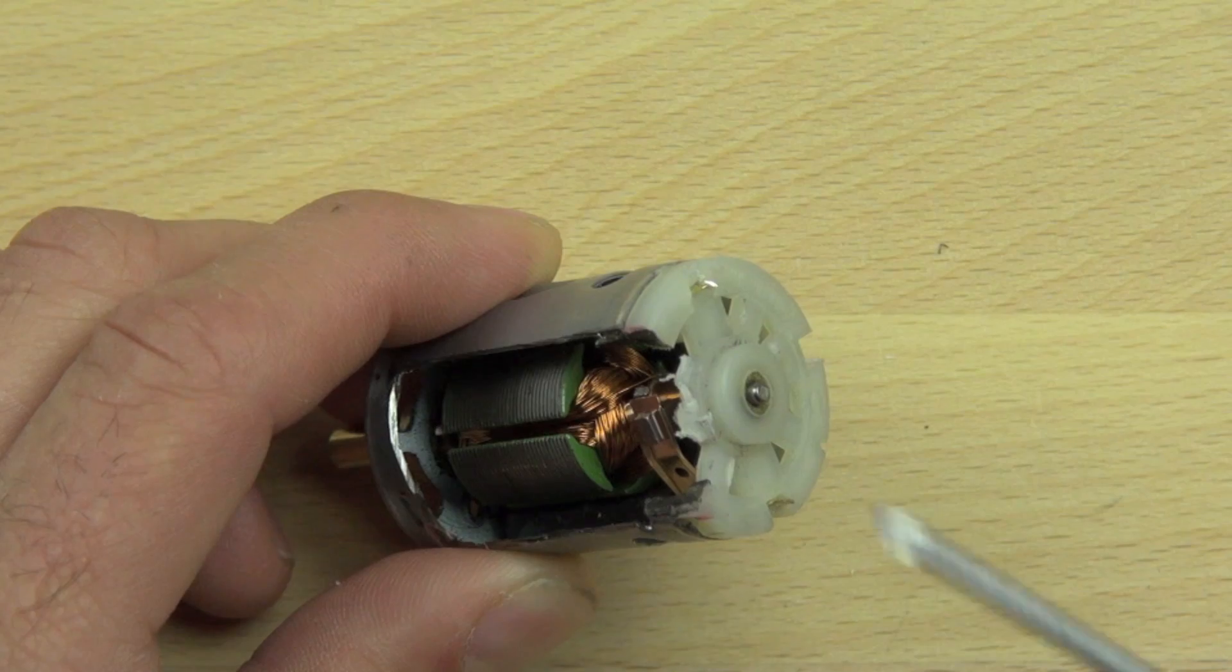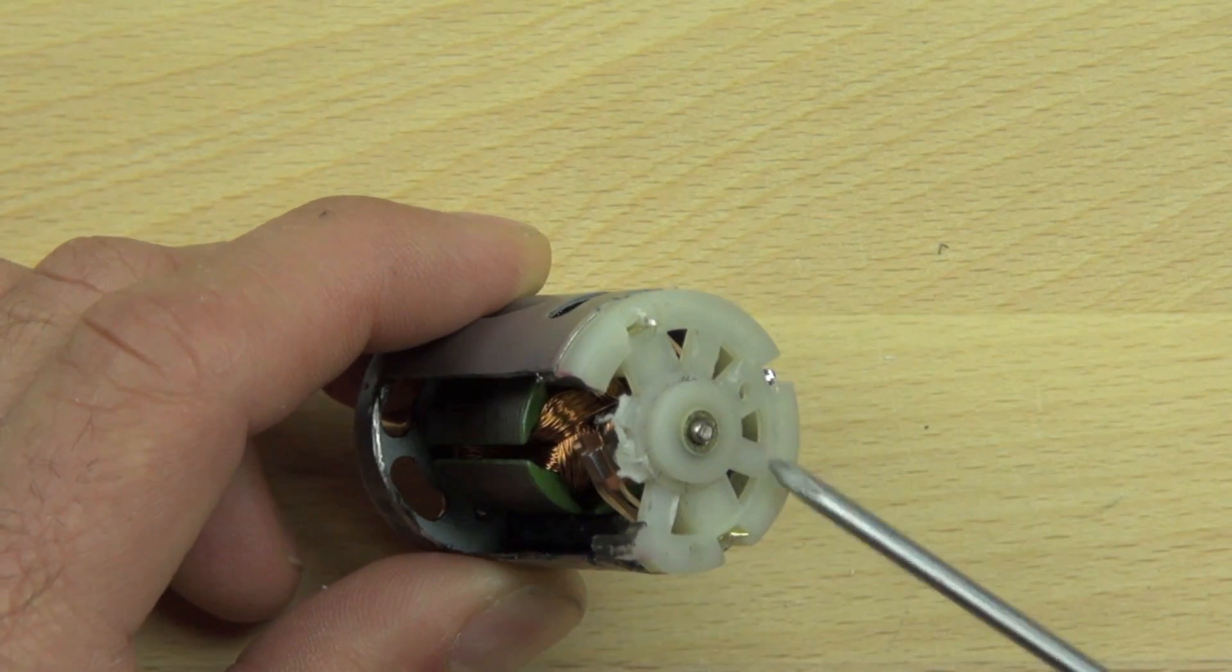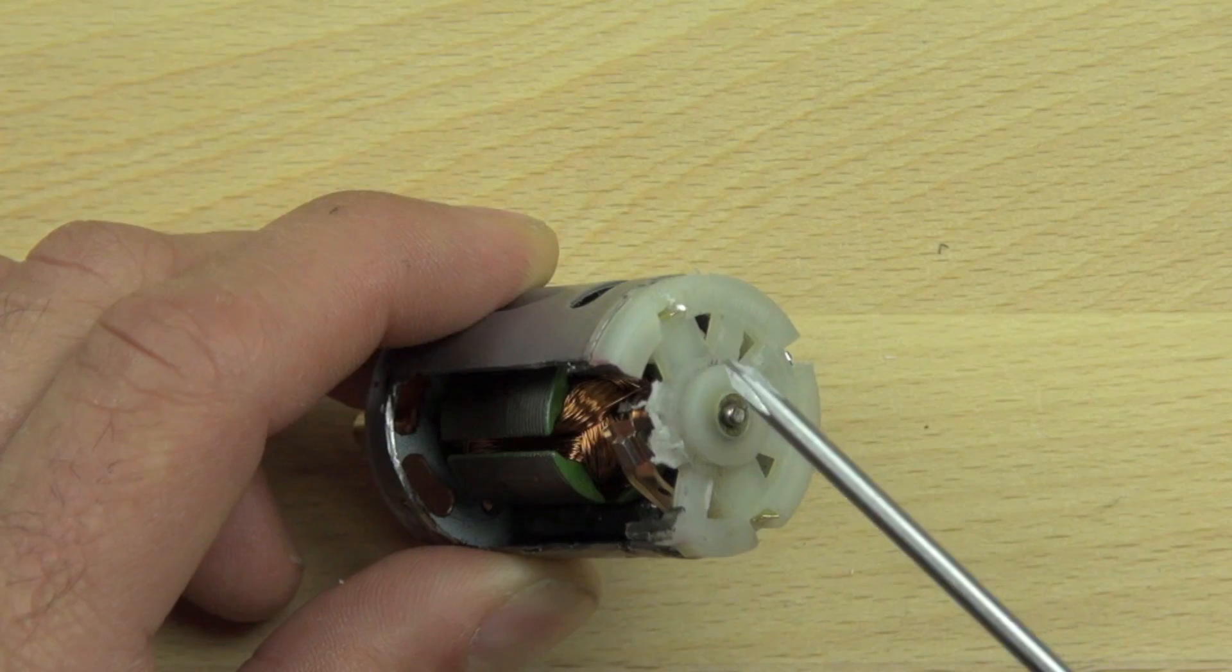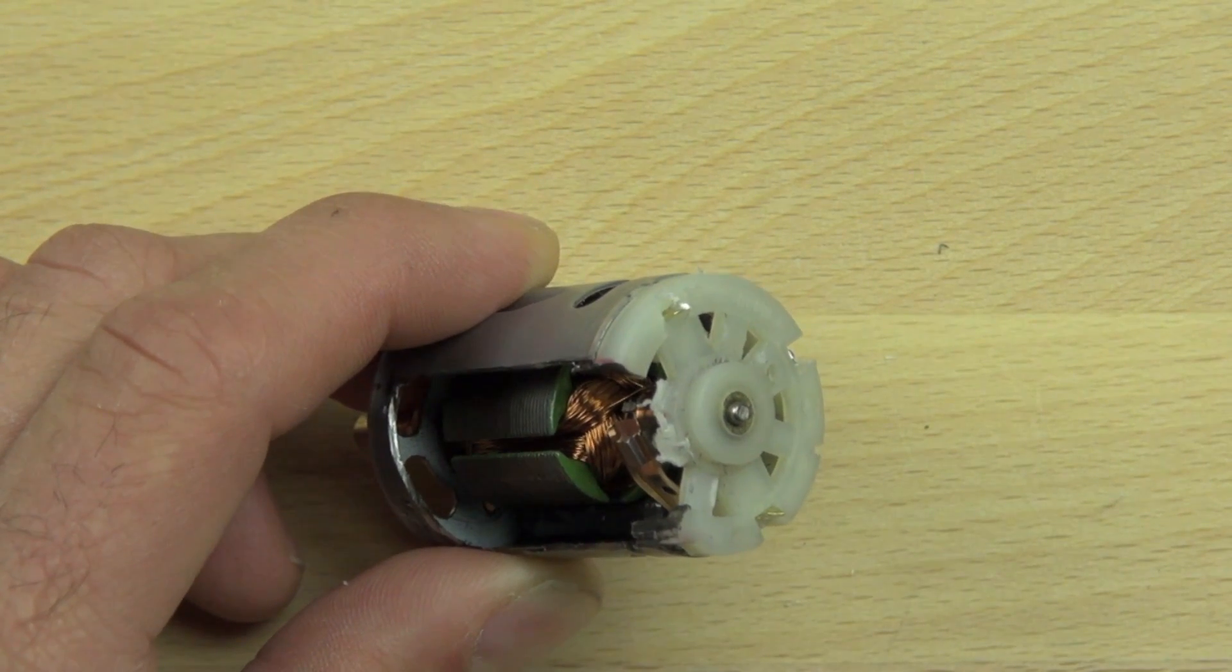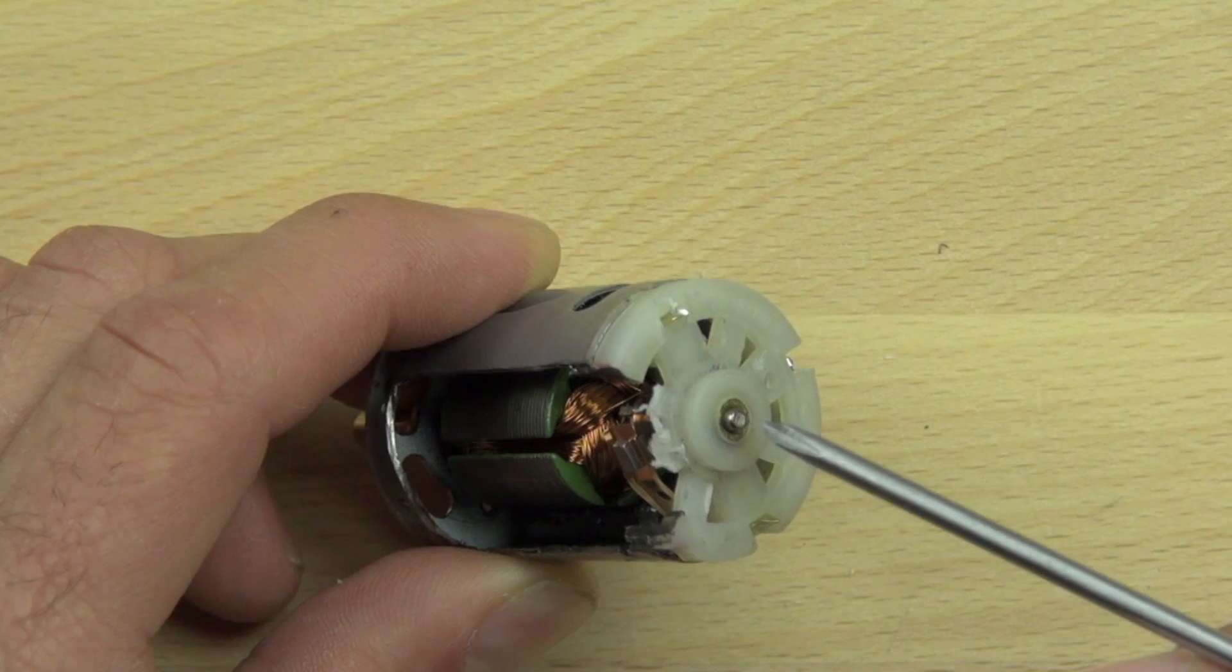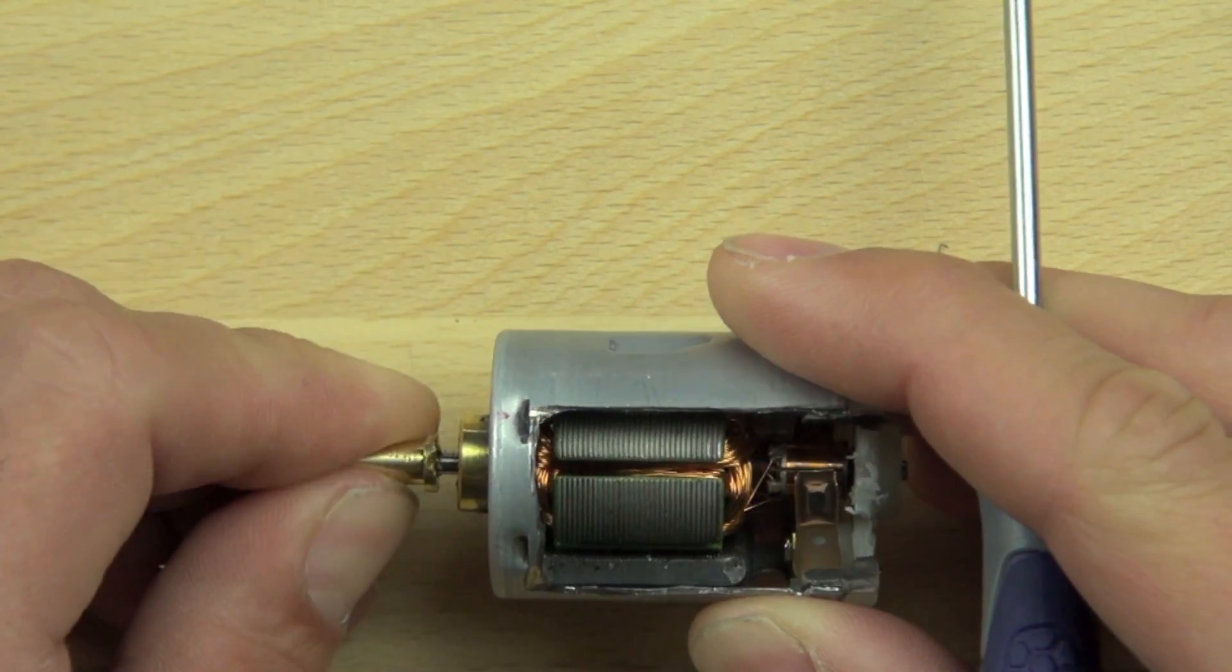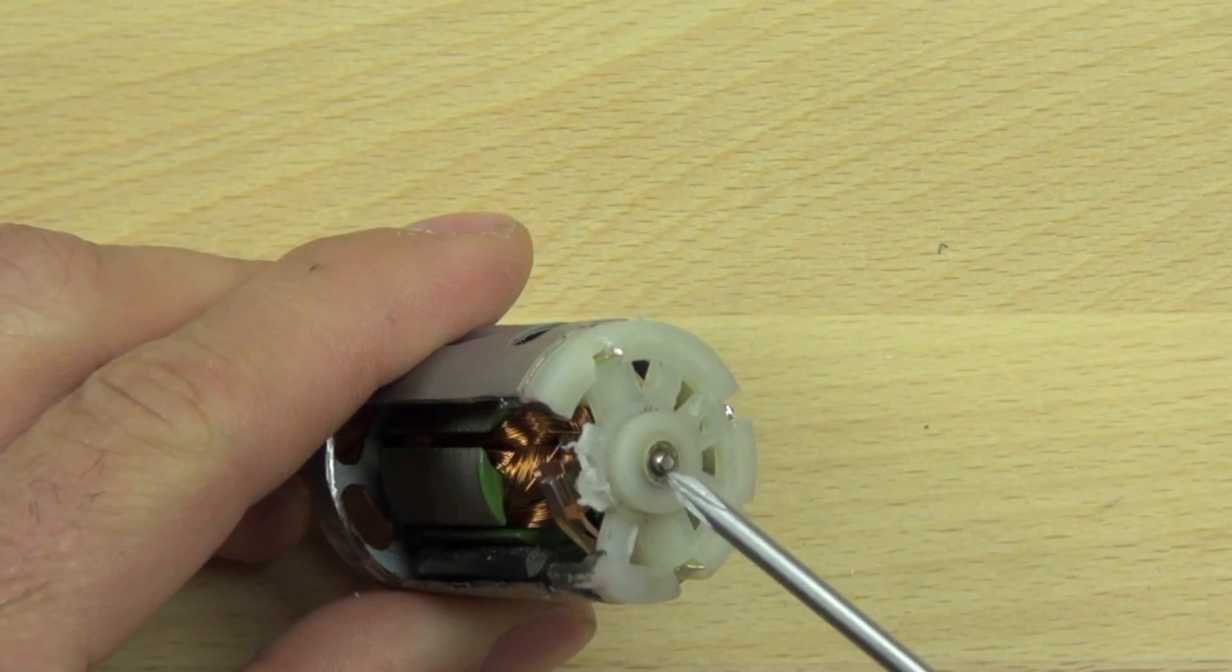And in this housing there are a number of different holes and those holes will let air flow through the motor to prevent it from overheating. And there's a little bearing in the center that holds the axle in place and that allows the motor to spin freely.